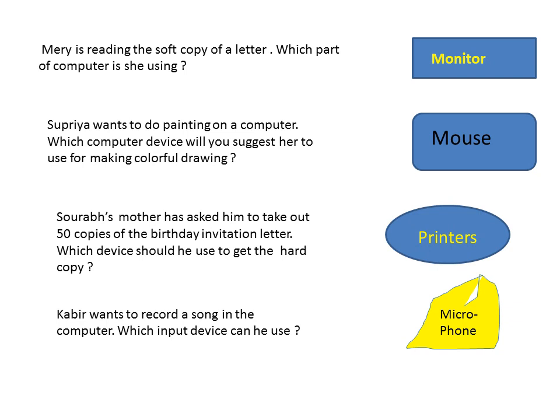Saurav's mother asked him to take out 50 copies of the birthday invitation letter. When you give invitation letters, they are printed ones. Which device should be used to get the hard copy? The printed copies are known as hard copy, and they can come out from the printer.